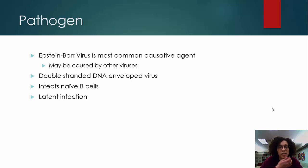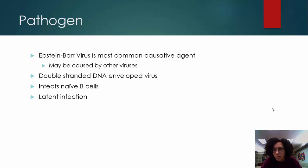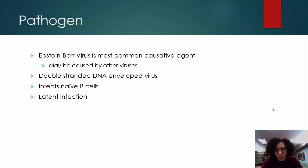It infects naive B cells — B cells before they have fully matured. These B cells continue on through their maturation process, and during this time some of them may present and express viral proteins, but a good number of them do not. It's not clear why some do and some don't express viral protein, but it isn't until they've differentiated into plasma cells when they lyse, normally.